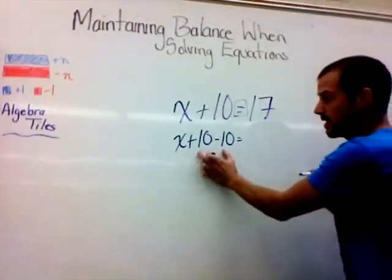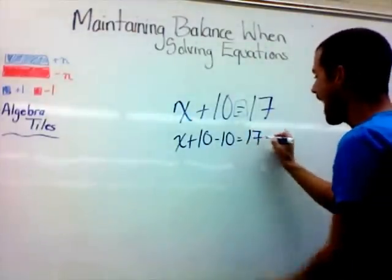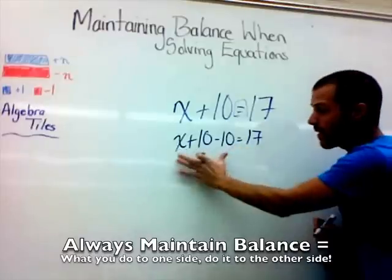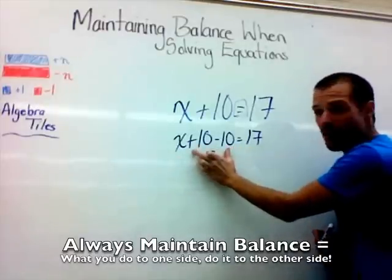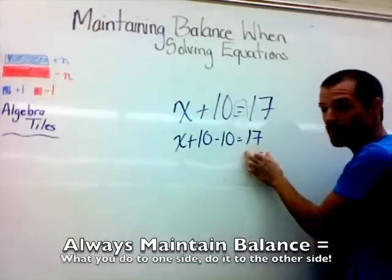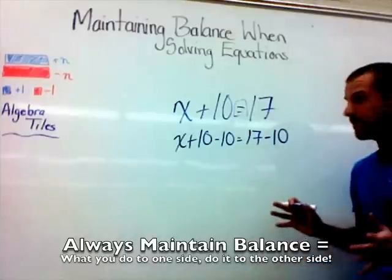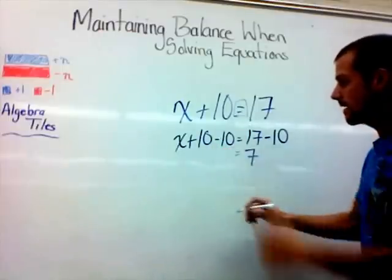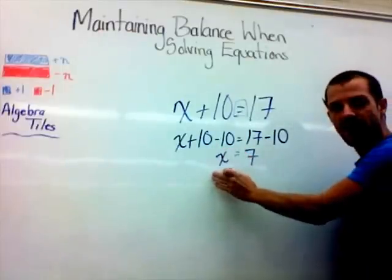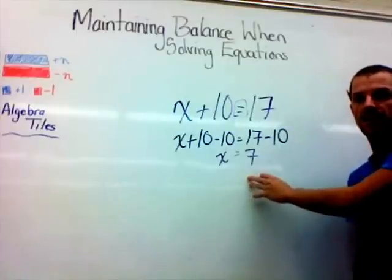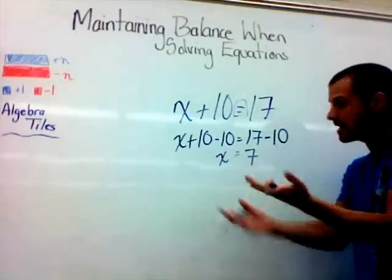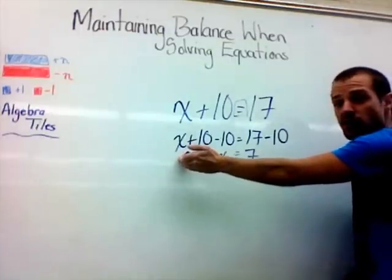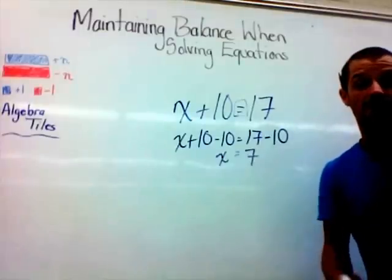Now we've got negative 10 and a positive 10 — together they create a 0. Because we added a negative 10 over here, we have to put a negative 10 on this side. Remember, the equal sign says whatever's on this side has to equal this side. We don't have 10 here anymore — we have 0, so we take 10 out from the other side too. 17 take away 10 gives us 7. 10 take away 10 leaves us with x. x is all that's left on one side, 7 is all that's left on the other, so x equals 7.